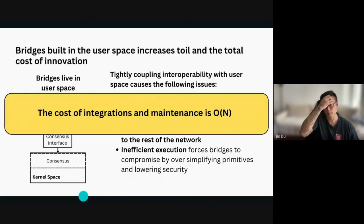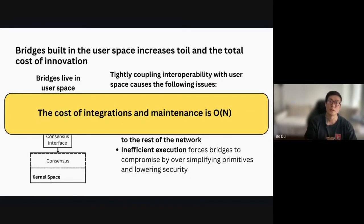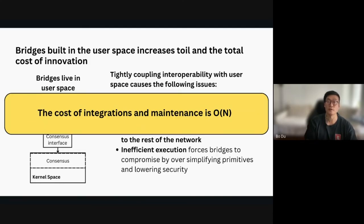The overall problem is that the cost of integrations and the cost of maintenance of this entire system grows with the number of unique types of chains. Ideally, we want a system where a chain builder can just import some library and they have networking out of the box — it just works and they don't need to implement and maintain additional infrastructure.